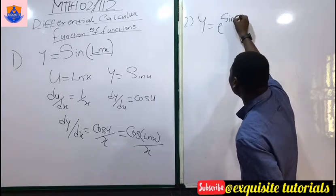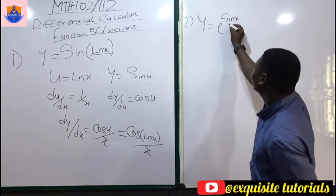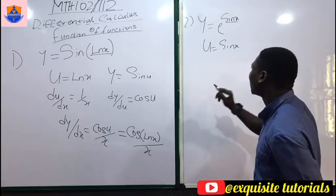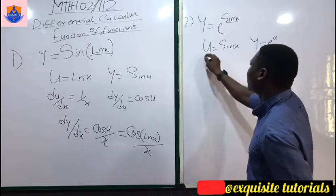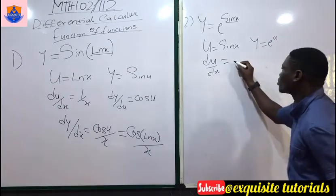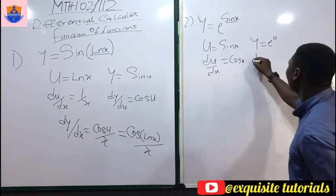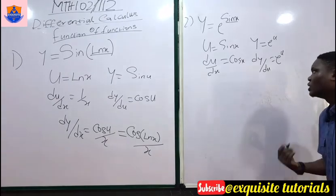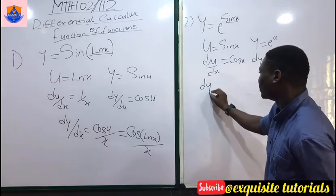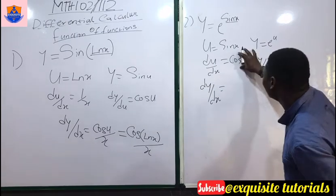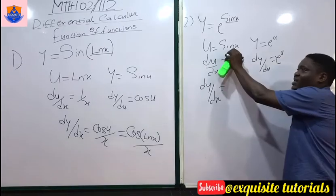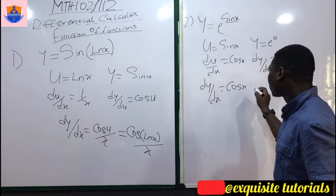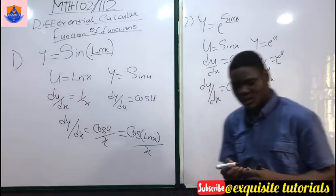Let's say y = e^(sin x). Let u = sin x, so y = e^u. Then du/dx = cos x, and dy/du = e^u (since differentiating an exponential gives the exponential back). Multiplying together: dy/dx = cos x · e^(sin x).